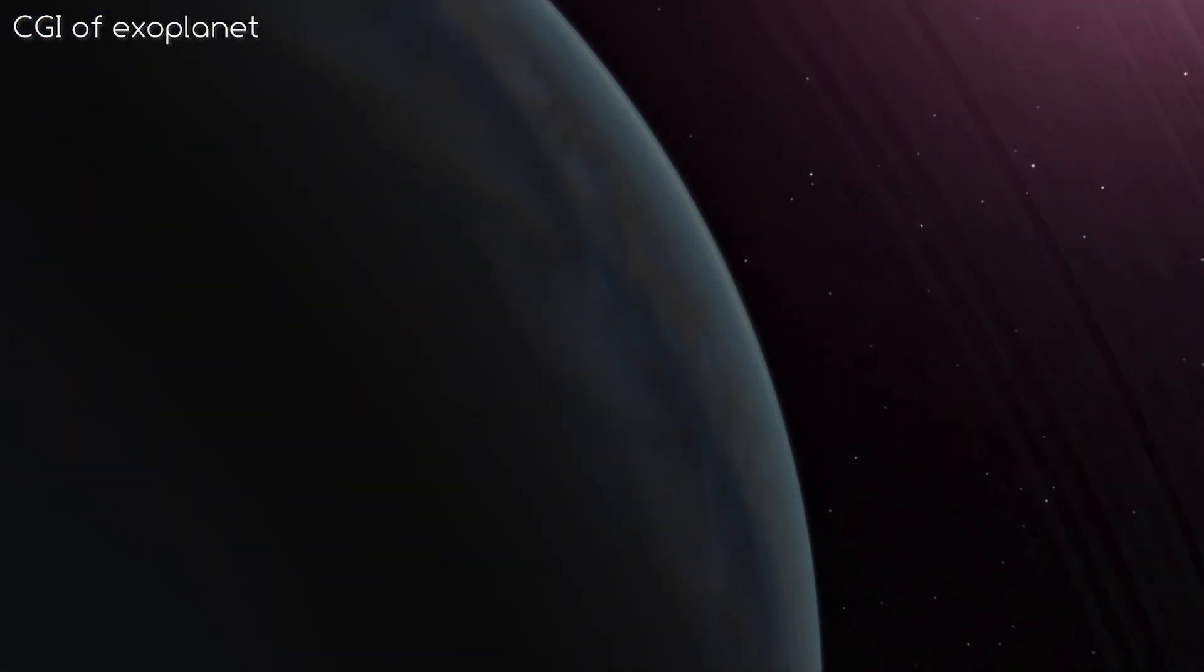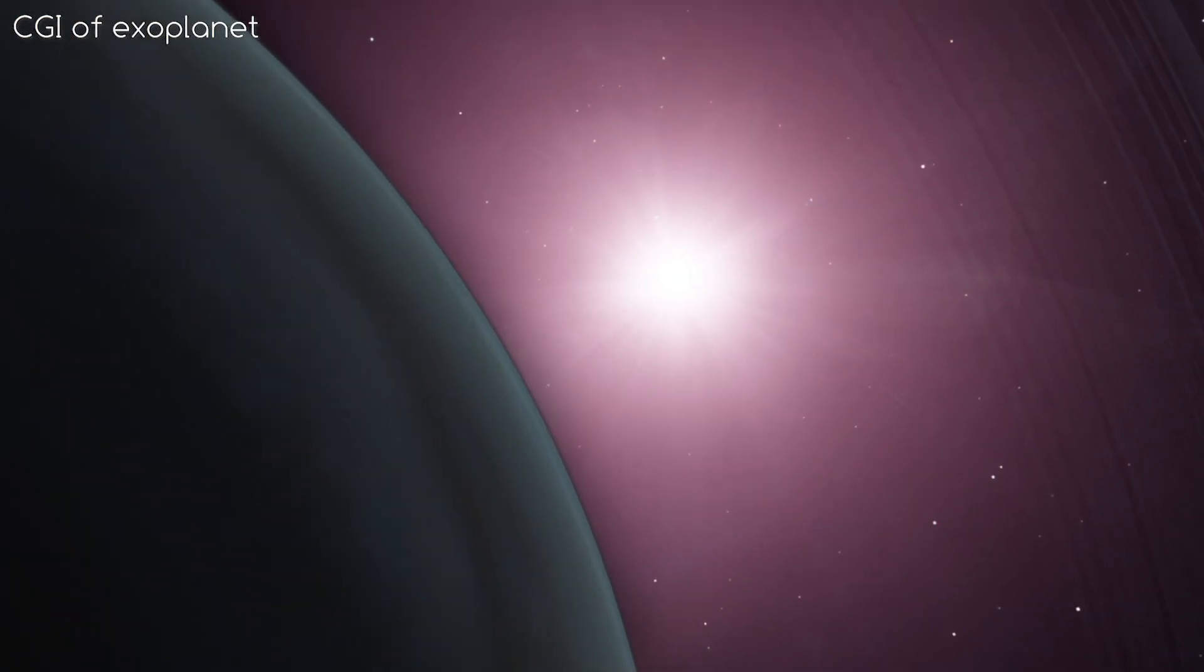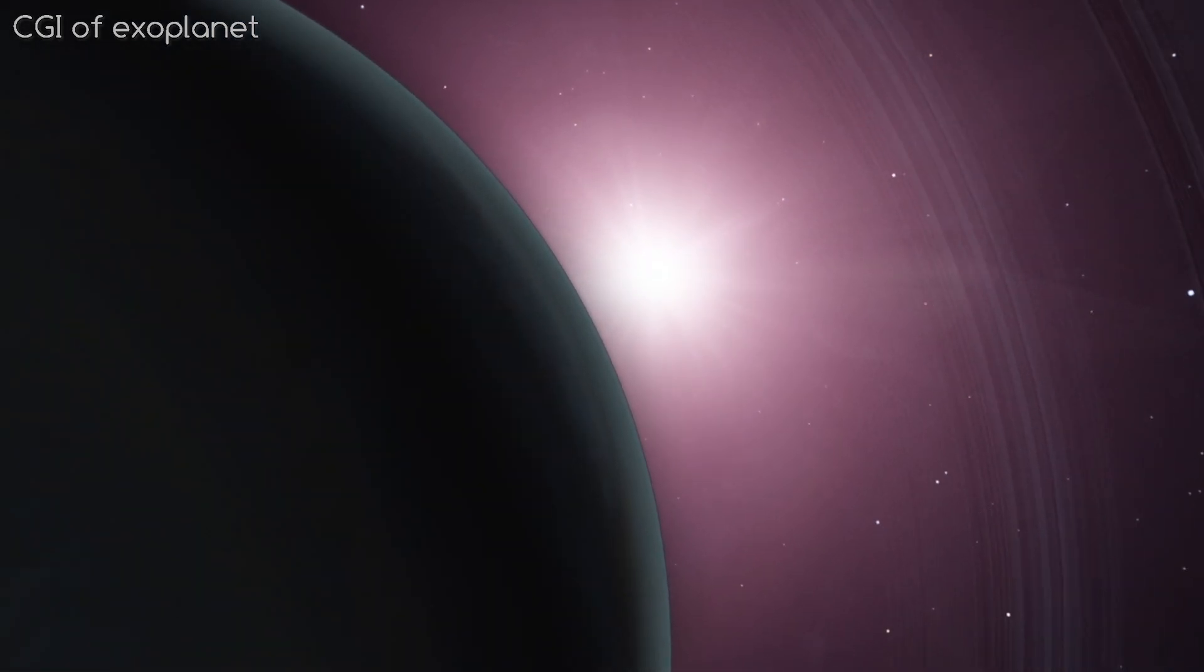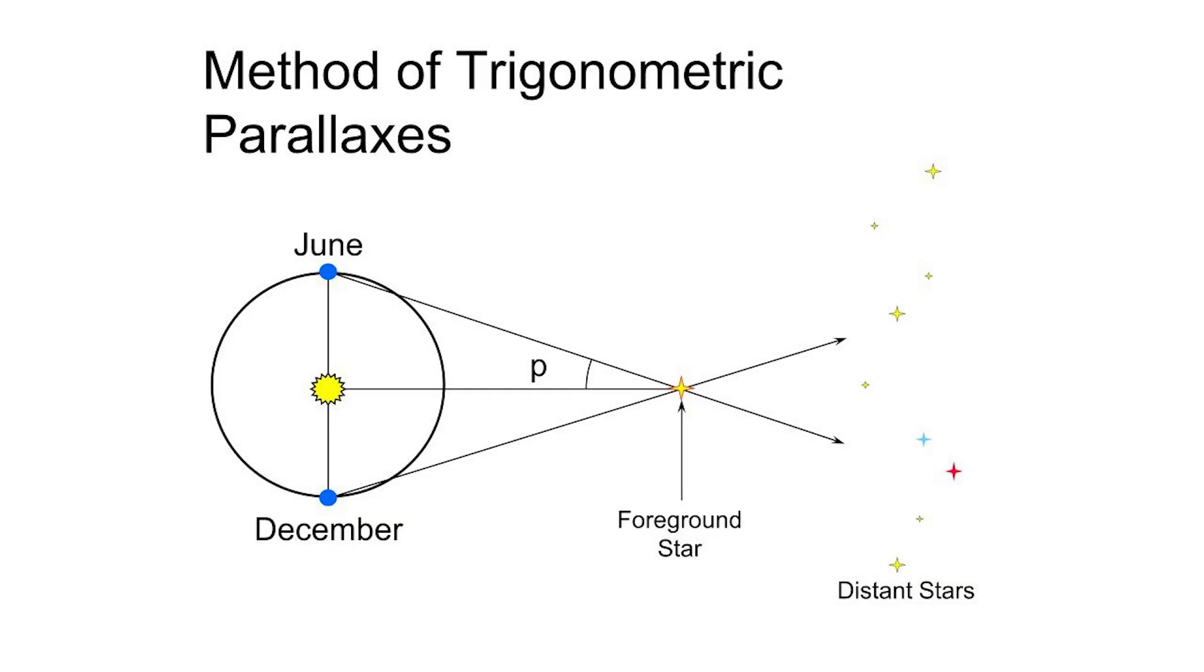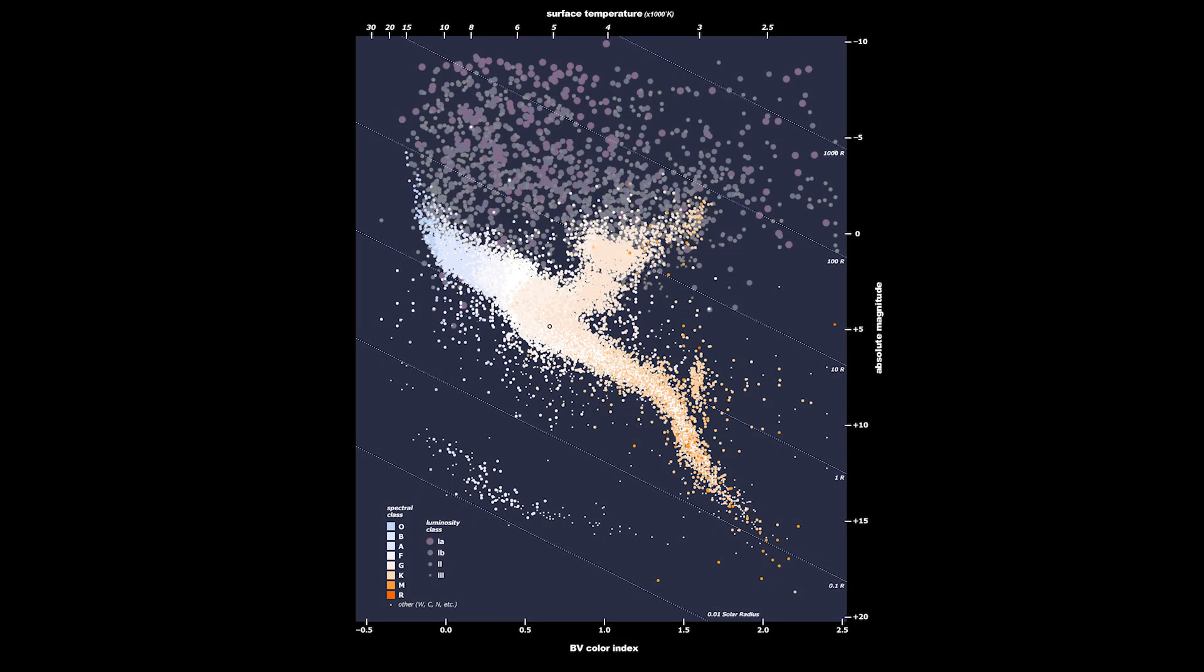In order to determine details about an exoplanet, the distance from us to its star needs to be worked out using complicated maths. For stars within 400 light years away from us, we can use trigonometry and the orbit of the Earth to create a difference in angles. Beyond that, there is no direct measurement.